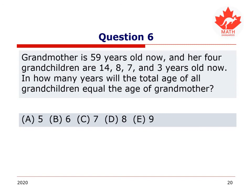Another question. Grandmother is 59 years old now, and her four grandchildren, pardon me, are 14, 8, 7, and 3 years old right now. In how many years will the total age of all the grandchildren equal the age of the grandmother? It's going to happen quite soon. It's going to happen somewhere between 5 years from now and 10 years from now. So take a second, pause the video, work this out for yourself, and then come back to us please.